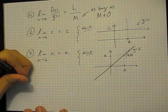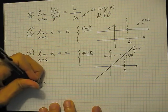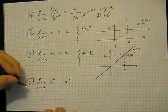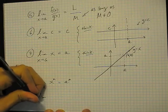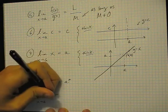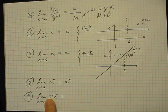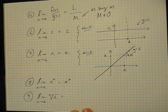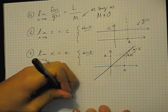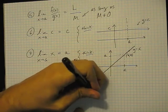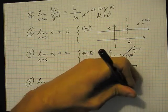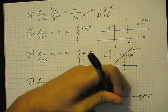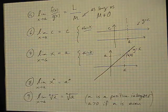We can apply the previous rule to get that if you have x raised to any power n, you'll get a raised to that power. Similarly, if you have a root, provided n is a positive integer, and if n is an even integer, then a cannot be negative because the even root of a negative number is not defined. So n is a positive integer, and a is positive if n is even.